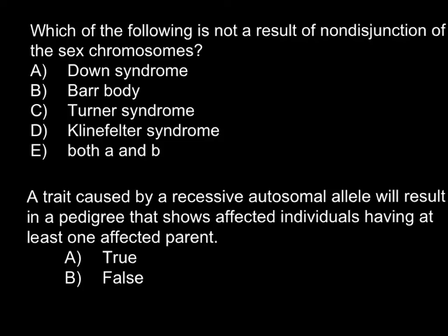I will start from answer D — Klinefelter Syndrome. This is going to be due to non-disjunction of the sex chromosome, and phenotypically this is going to be male with two X chromosomes. So this would be XXY — phenotypically male but with one extra X chromosome. So this is due to non-disjunction of the sex chromosome, and we have to search for the answer that is not a result of non-disjunction. This answer D is a result of non-disjunction.